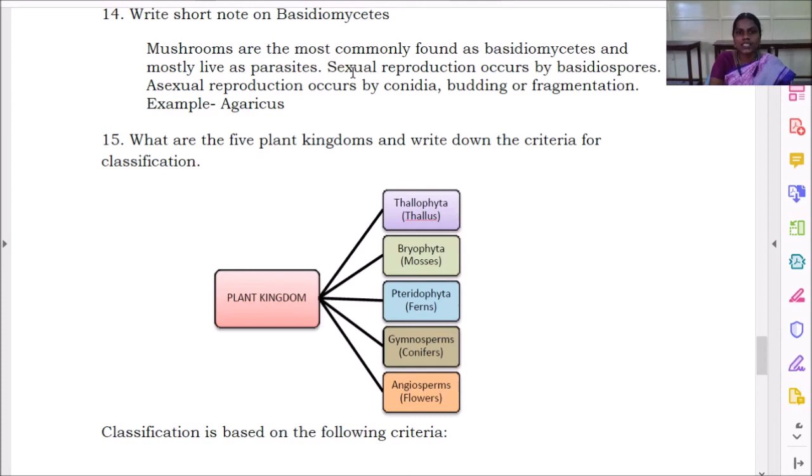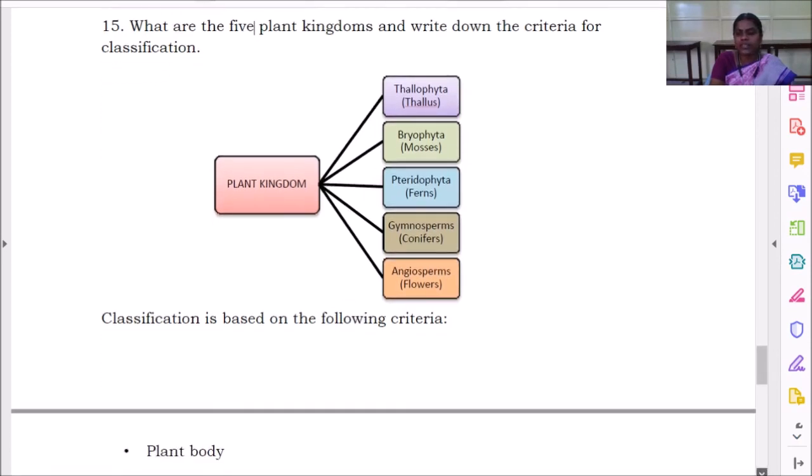They reproduce sexually. Sexual reproduction occurs in basidiomycetes spores. Asexual reproduction occurs by conidia, budding, or fragmentation. This is how it will reproduce.